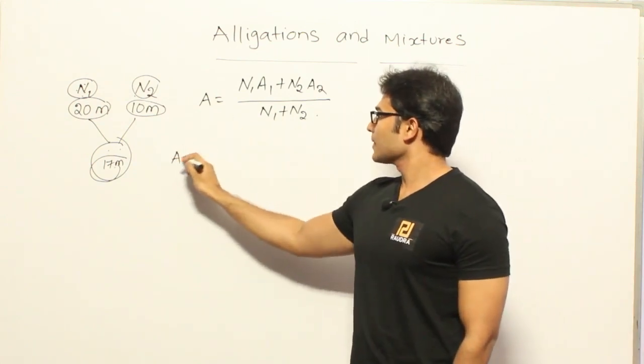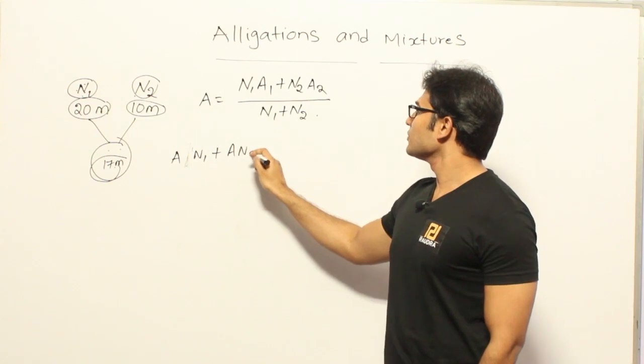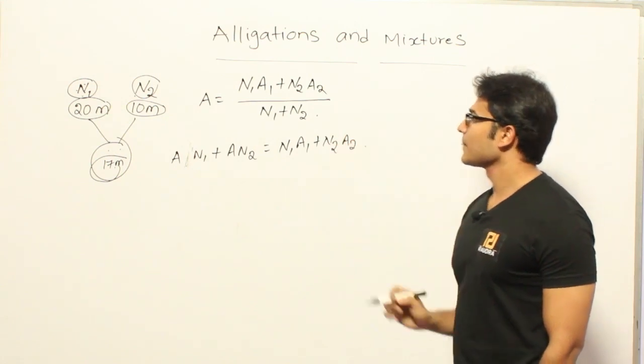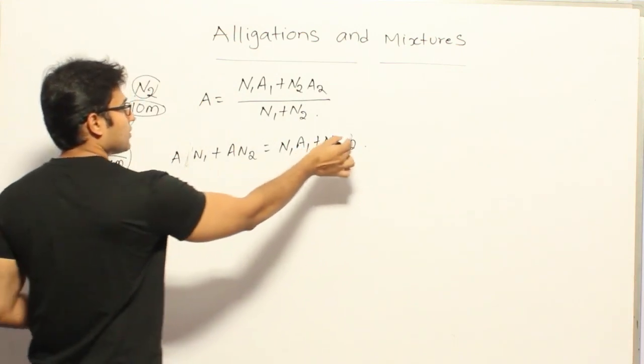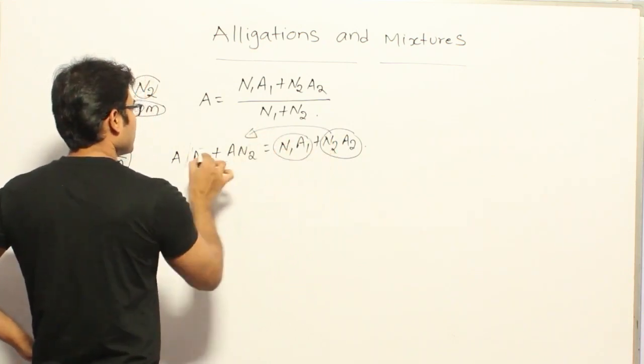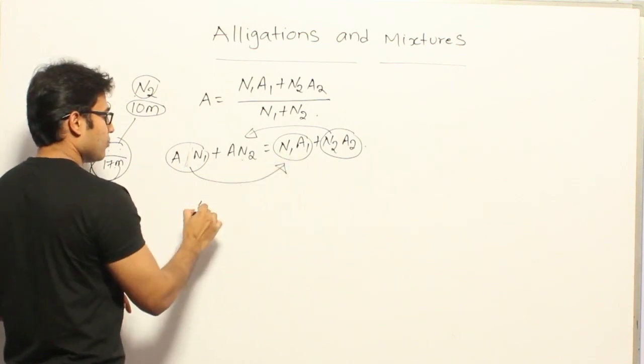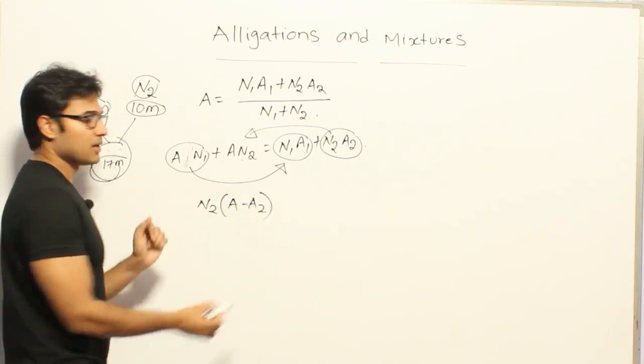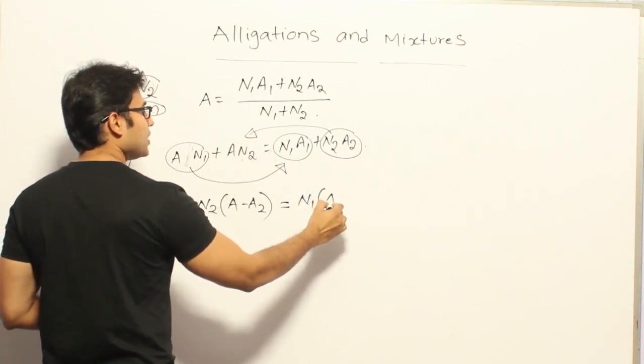Now, I will just cross multiply. A into N1 plus A into N2 equal to N1A1 plus N2A2. Now, let me try to get this one to this side, and let me try to push this one to the other side. Then what I get is, if I pull out N2 as common, then I get A minus A2, equal to N1 into A1 minus A.